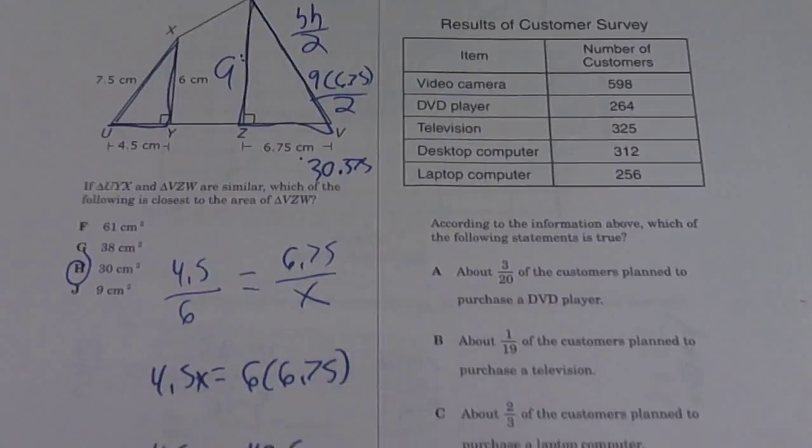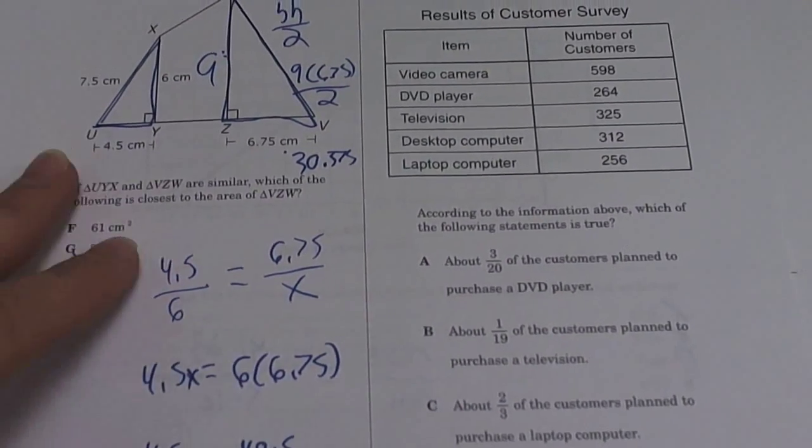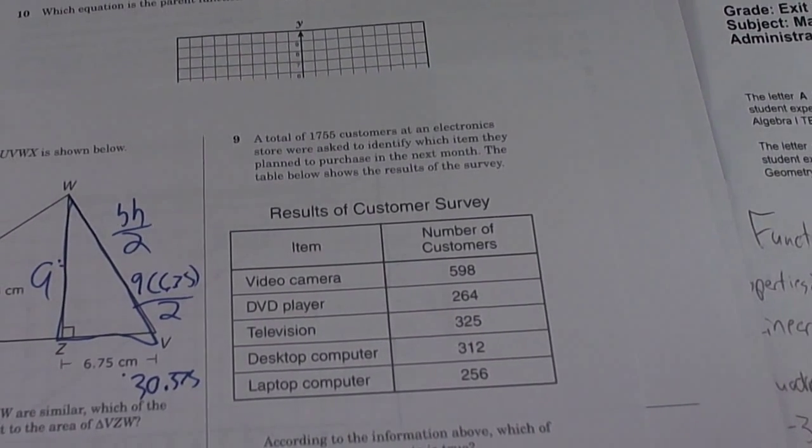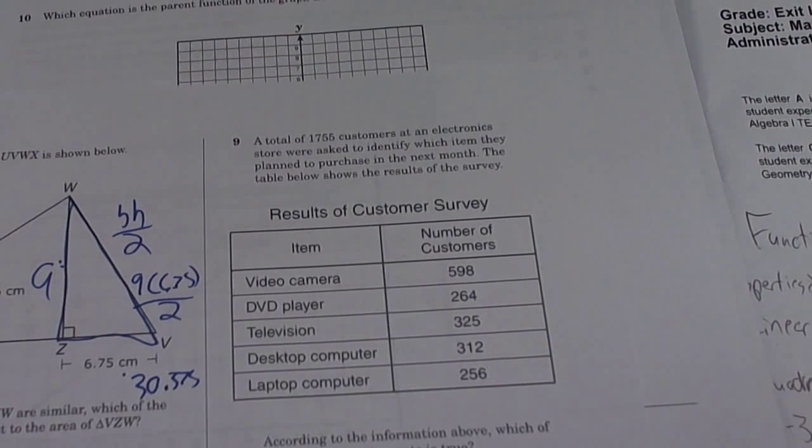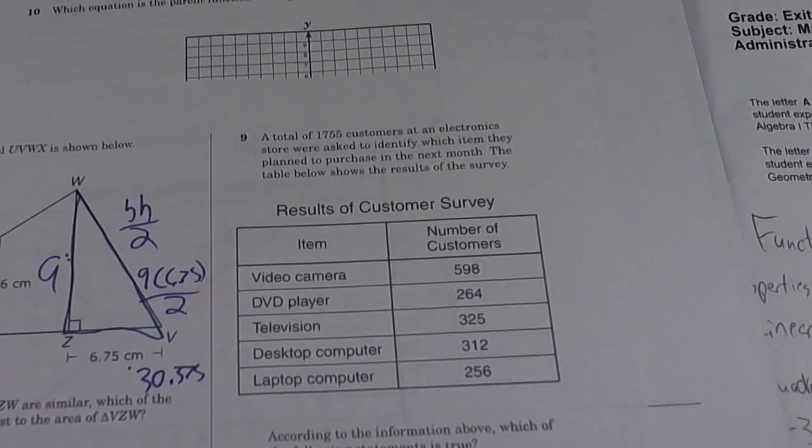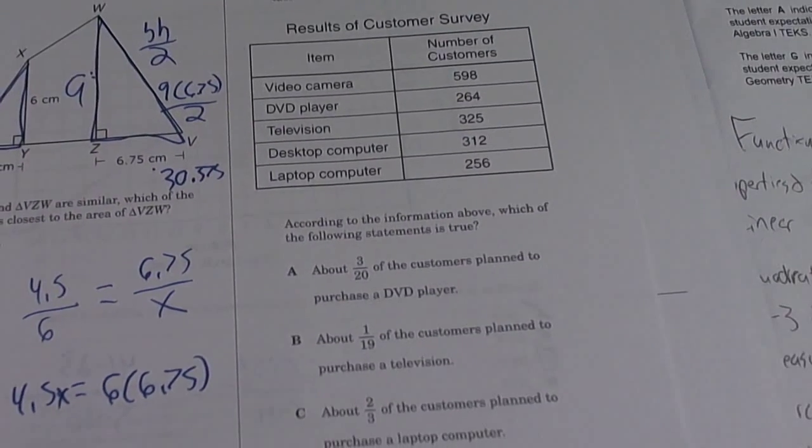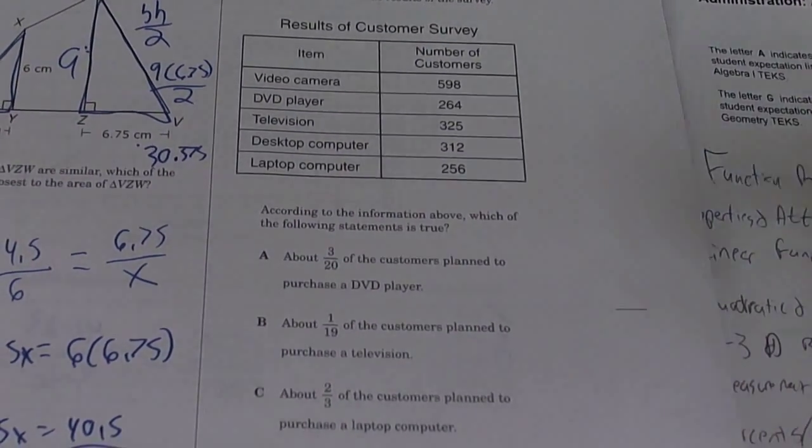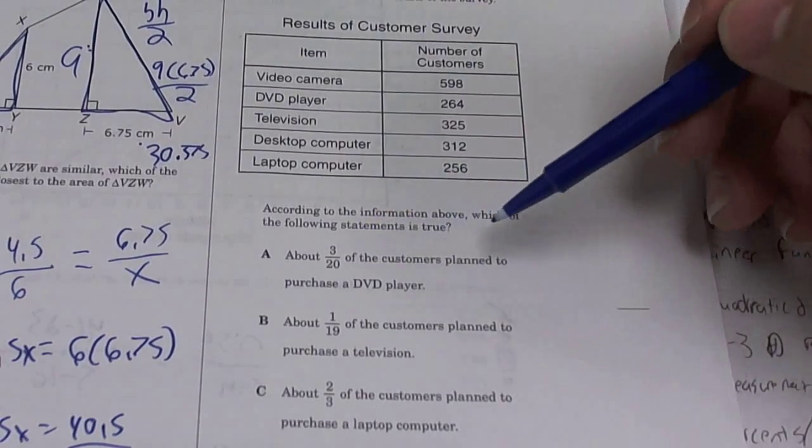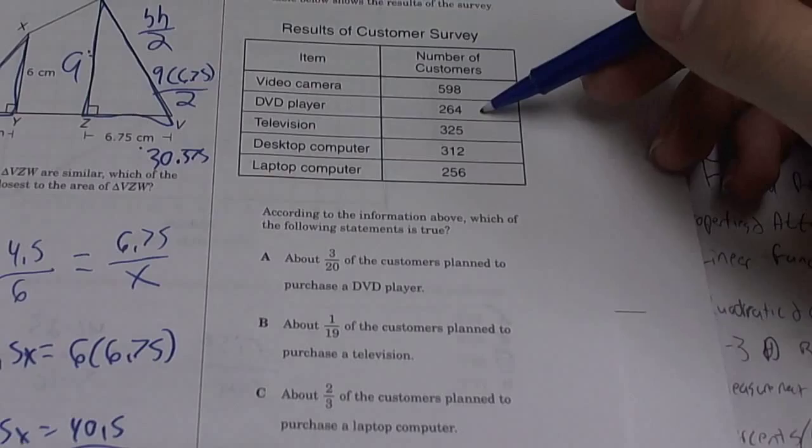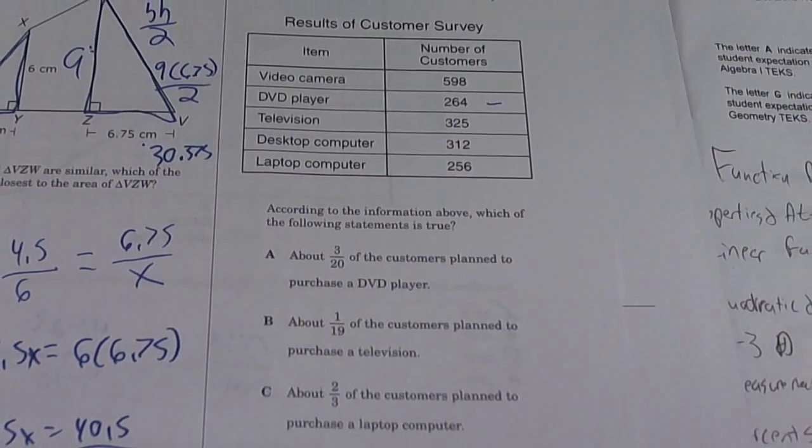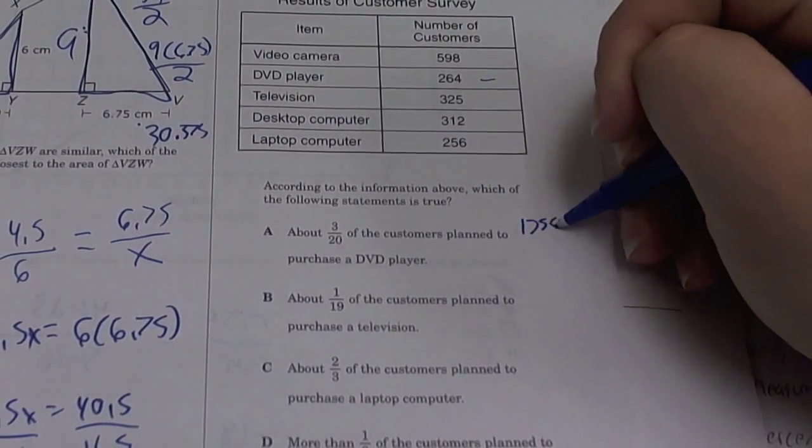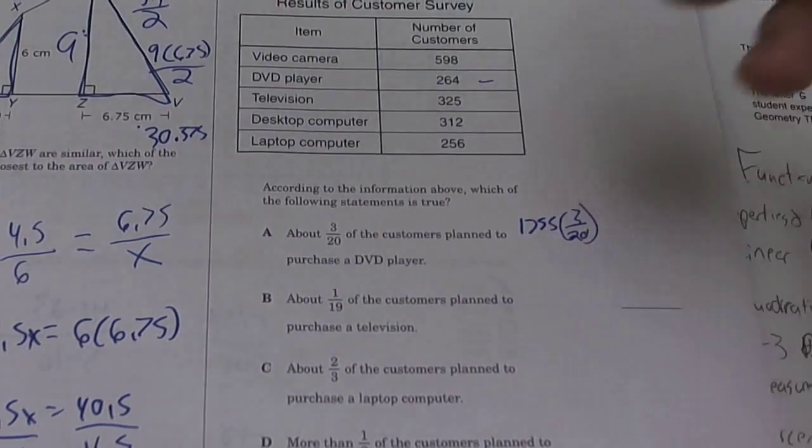All right, so about 3/20 of the customers plan to purchase a DVD player. DVD players is 264. So what's 3/20 of 1755? So what do you do? You have to multiply. So 1755 times 3 over 20. You're using a calculator, so 1755 times 3/20 is about 263.25. So that's pretty close, that's pretty much 264. So we're gonna keep it. We're not sure yet, we gotta check the other ones first.